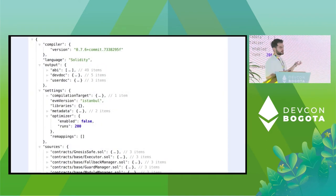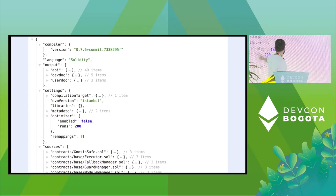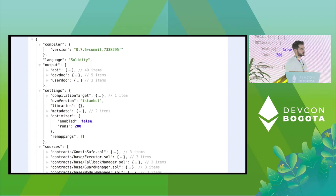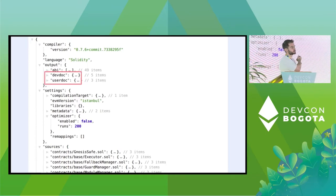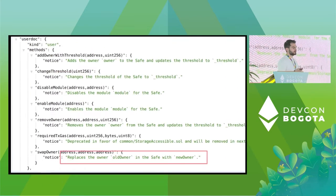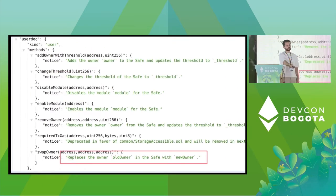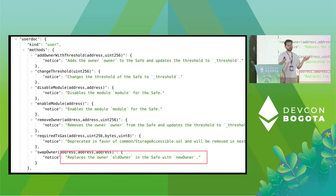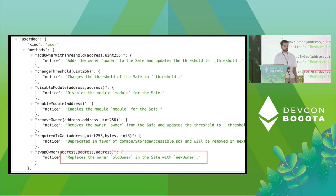The metadata file is a JSON file. It has compiler language, settings, and source file information. In the output you can see the user doc and dev doc. Opening those fields, you have the methods, and for each method you have the @notice field or the dev doc field. For example, this replaces the new owner and old owner with the comment we have seen before.